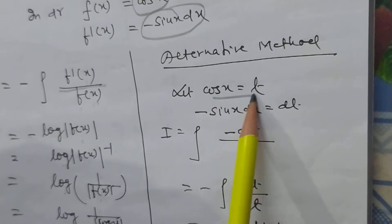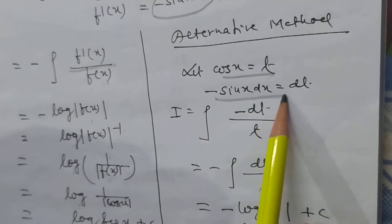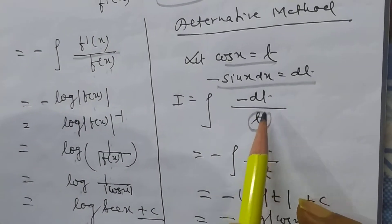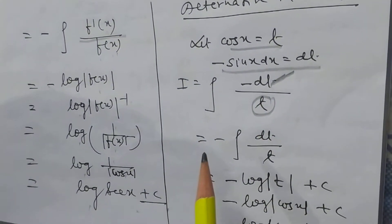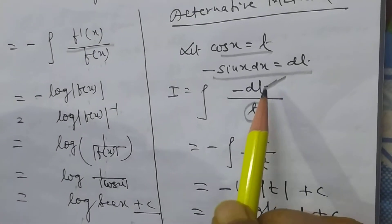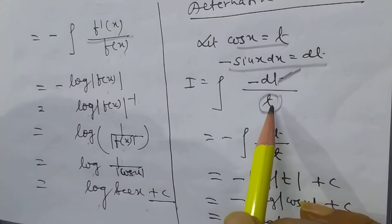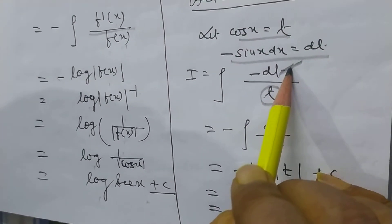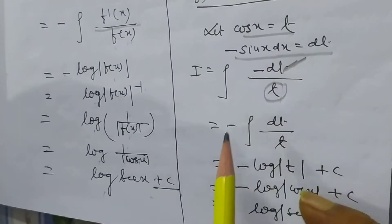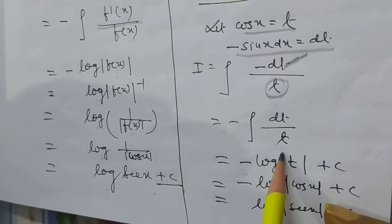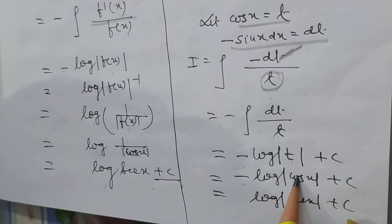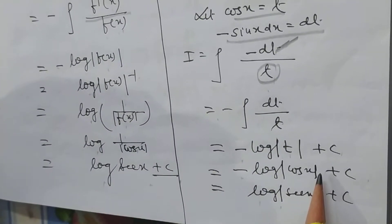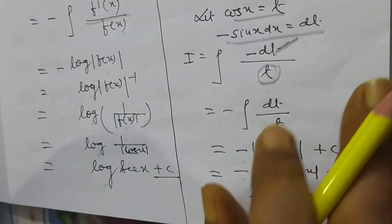Using the substitution method: let cos x = t, so −sin x dx = dt. Then the integral of sin x/cos x dx becomes the integral of −dt/t, which equals −log|t| + c. That is −log|cos x| + c, which equals log|cos x|^(−1), that is log|sec x| + c.